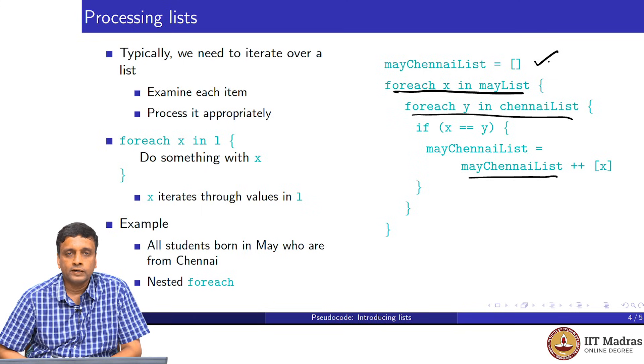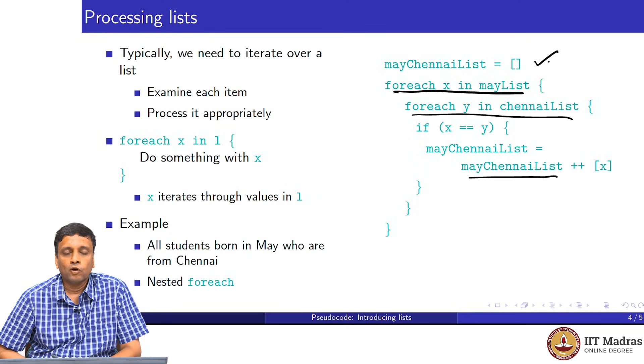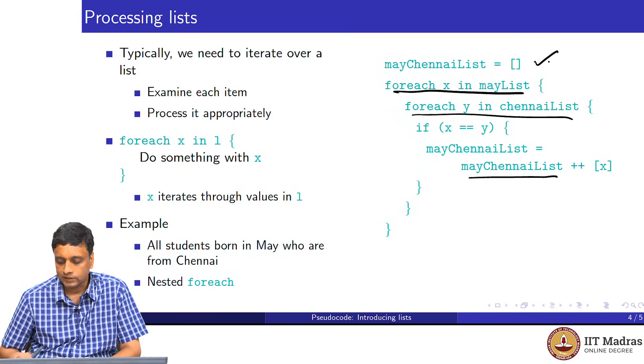To begin with, we had no students who were both born in May and from Chennai. And systematically, we did not go back notice, we did not go back to the actual table. We already had these lists, May list and Chennai list. And now by just doing a nested iteration using this foreach, we are able to extract the common elements. This is a typical way in which we process lists.